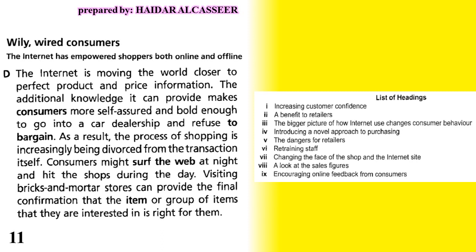Paragraph D: 'The internet is moving the world closer to perfect product and price information.' This first sentence has no strong main idea, so we read the second: 'The additional knowledge it can provide makes consumers more self-assured.' Consumers means customers or buyers; 'more self-assured' means confidence. So the answer is number one: 'increasing customer confidence.'